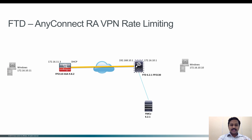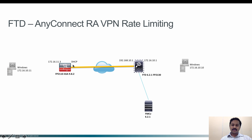In this example, I have an FTD running on a Firepower 2130 which is managed by Firepower Management Center. On the peer device I have an ASA running on a Firepower 2110. The outside interface of the ASA has been configured as DHCP, so it does not have a static IP. Let's see what is required to configure on the Firepower Management Center to establish a tunnel between FTD and the ASA which has a dynamic IP.